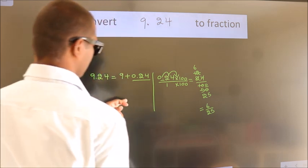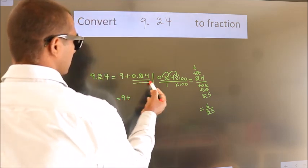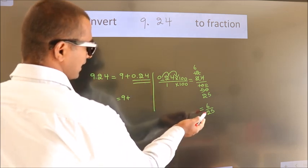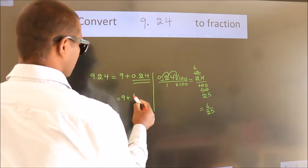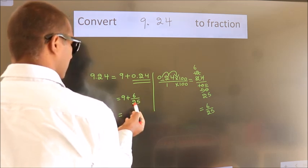Now here, 9 plus, in place of 0.24, we write this fraction 6 by 25. So 9 plus 6 by 25.